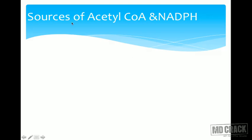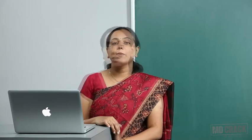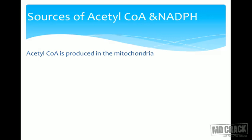From where does acetyl-CoA come? Whenever there is excess calorie intake — excess carbohydrates means more glycolysis — glucose is converted to pyruvate, pyruvate is converted to acetyl-CoA. So one of the biggest sources of acetyl-CoA is pyruvate. Acetyl-CoA is formed from pyruvate in the mitochondria by the pyruvate dehydrogenase complex, but synthesis is taking place in the cytoplasm.